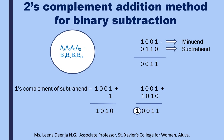For subtracting a binary number B3 B2 B1 B0 from another binary number A3 A2 A1 A0, one method is to find the two's complement form of B3 B2 B1 B0, then add the result with binary number A3 A2 A1 A0. Two's complement of a number can be obtained by taking the one's complement of the number and then adding one to its least significant bit.